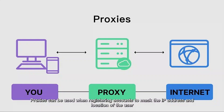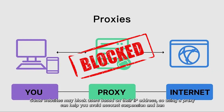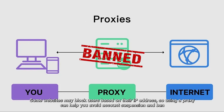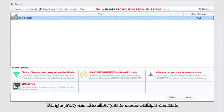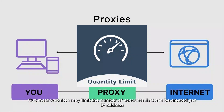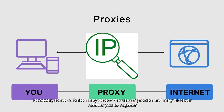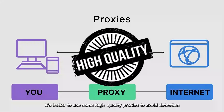Proxies can be used when registering accounts to mask the IP address and location of the user. Some websites may block users based on their IP address, so using a proxy can help you avoid account suspension and ban. Using a proxy can also allow you to create multiple accounts, since most websites may limit the number of accounts that can be created per IP address. However, some websites may detect the use of proxies and may block or restrict your registration. It's better to use high-quality proxies to avoid detection.